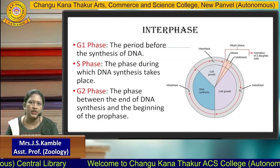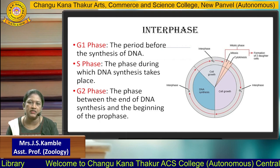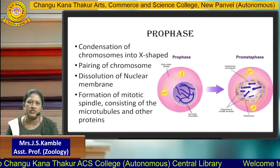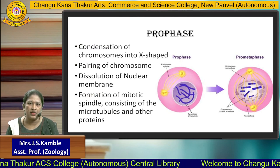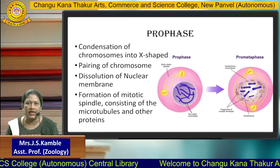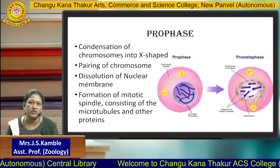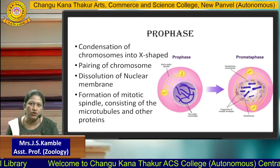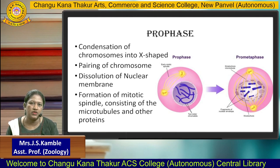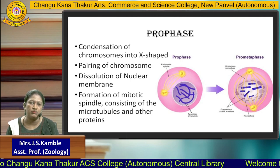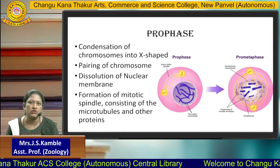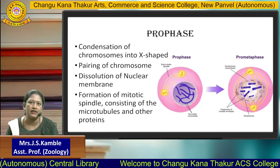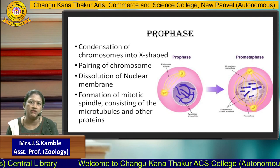After immediately the G2 phase, the cell enters into the mitotic phase, which consists of four phases. The first phase is prophase. In the prophase, the chromosomes condense into an X-shaped structure. Before entering prophase, the chromosome is in the form of a long thread. To fit that long chromosome into the short nucleus, the chromosome must be condensed. Hence, in the prophase, the chromosomes get condensed so they can fit into the short space of the nucleus.